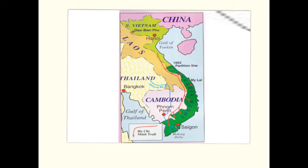The Vietnam War was a war fought in Southeast Asia in the 1960s and 70s. It was between communist North Vietnam and US-backed South Vietnam. The map shows the two countries involved: in the north we have North Vietnam, which was communist, and in the south we have South Vietnam, which was capitalist and backed by the Americans.